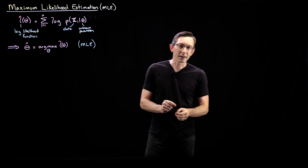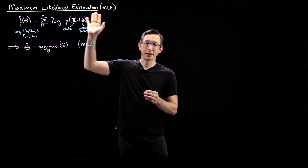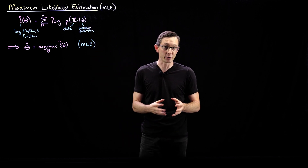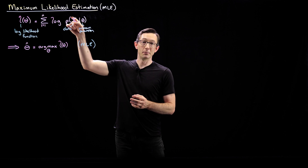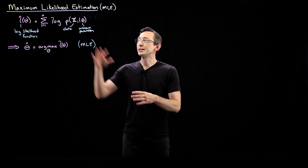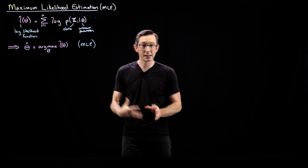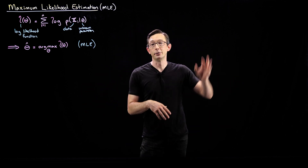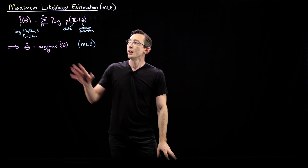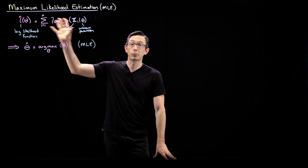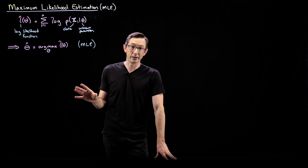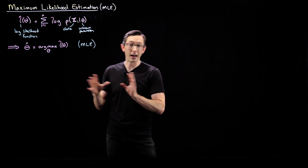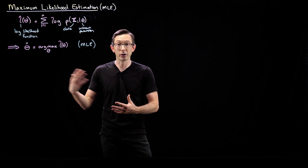Welcome back. We've been talking about the maximum likelihood estimation technique for estimating the unknown parameters of a probability distribution function p given some sample data X. This is a really powerful method in statistics for parameter estimation that also generalizes pretty nicely to machine learning and Bayesian statistics. Today I'm going to give you some useful properties of the maximum likelihood estimate and talk briefly about how these properties work and what they mean for using this in practice.